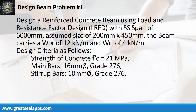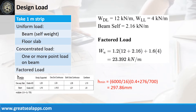Stirrup bars: 10 mm bar, grade 276. The beam carries a uniform dead load of 12 kN per meter and uniform live load of 4 kN per meter. The beam's self-weight is 2.16 kN per meter, for a factored load of 23.392 kN per meter.